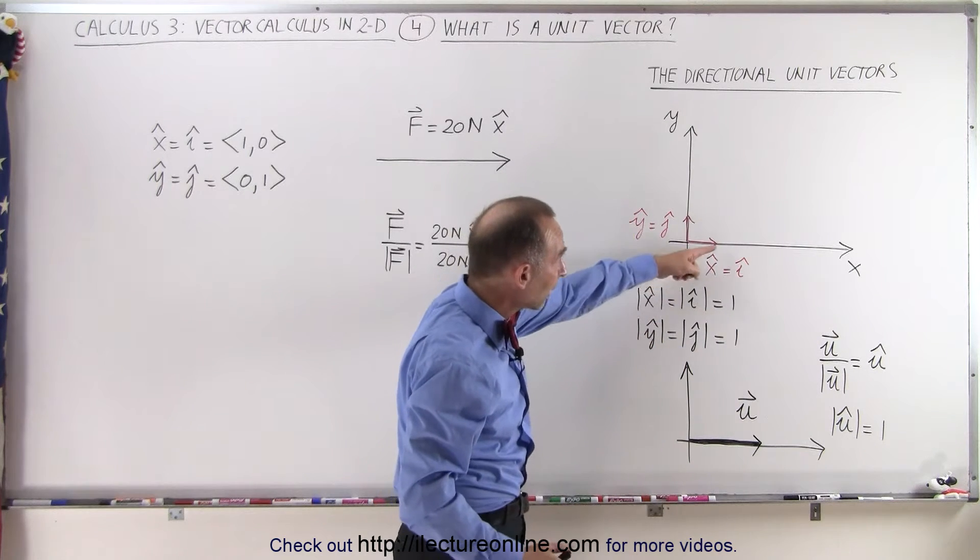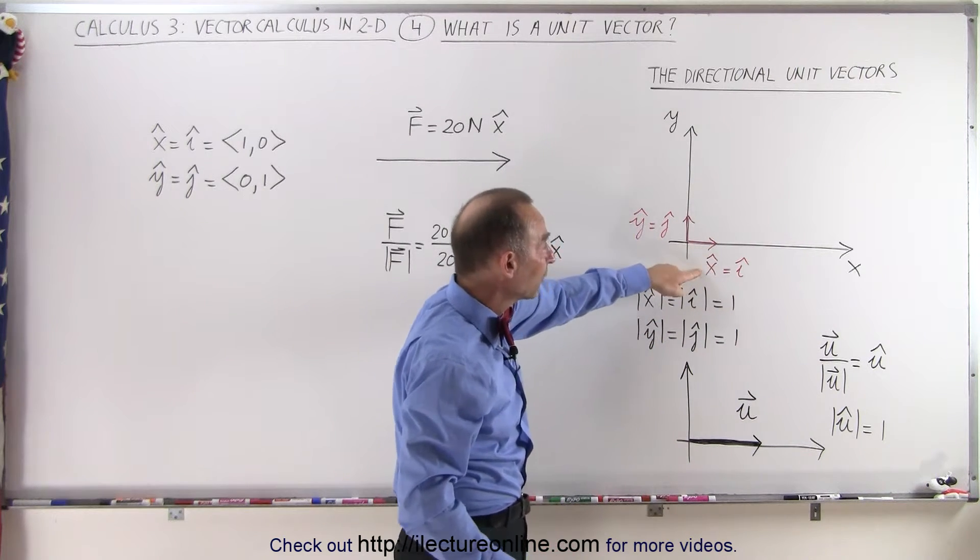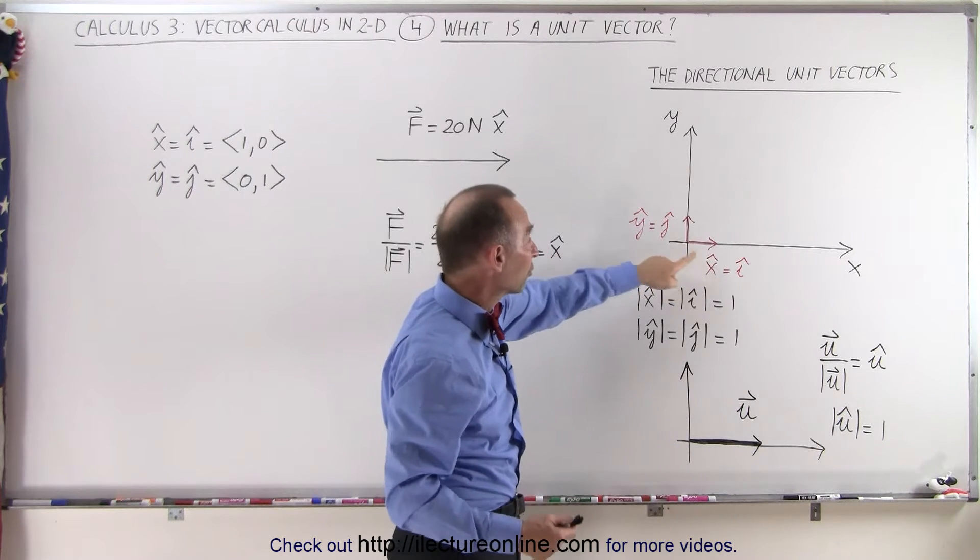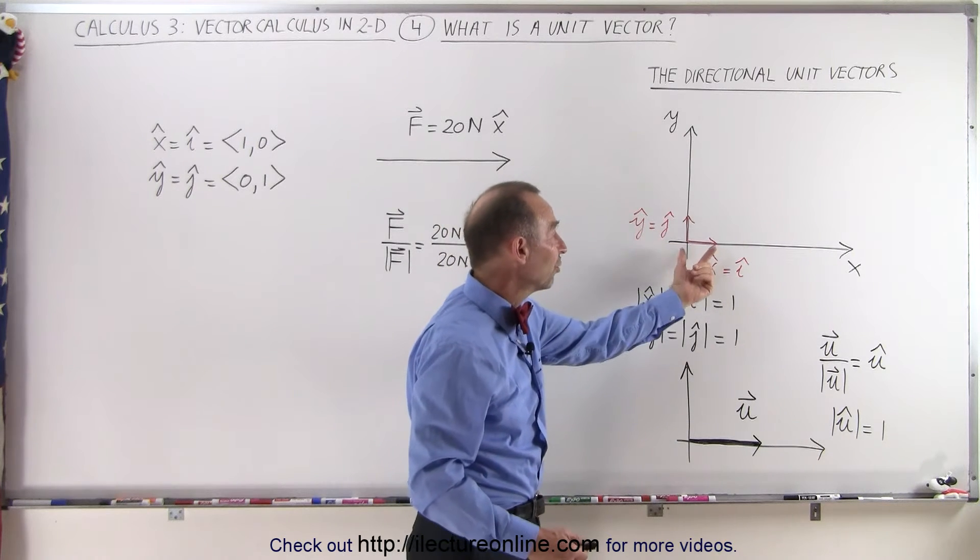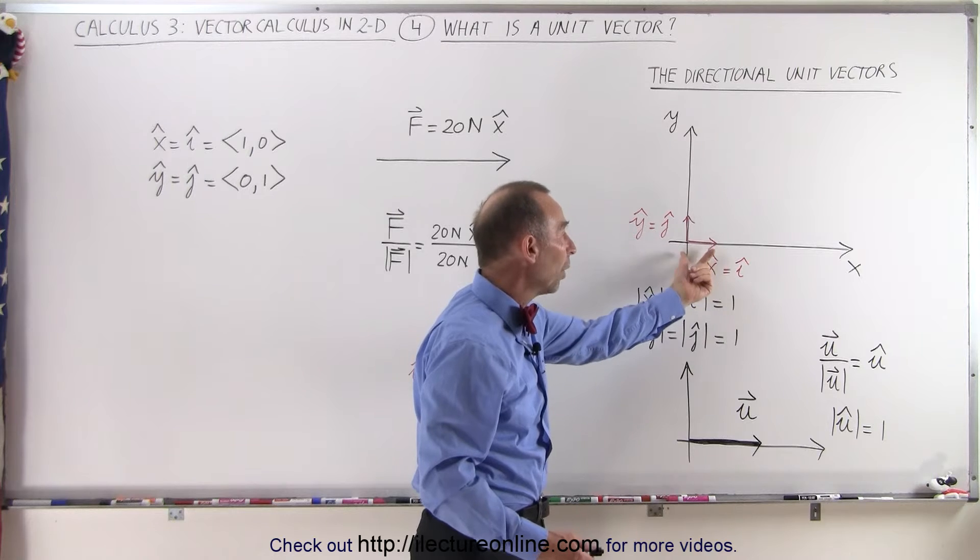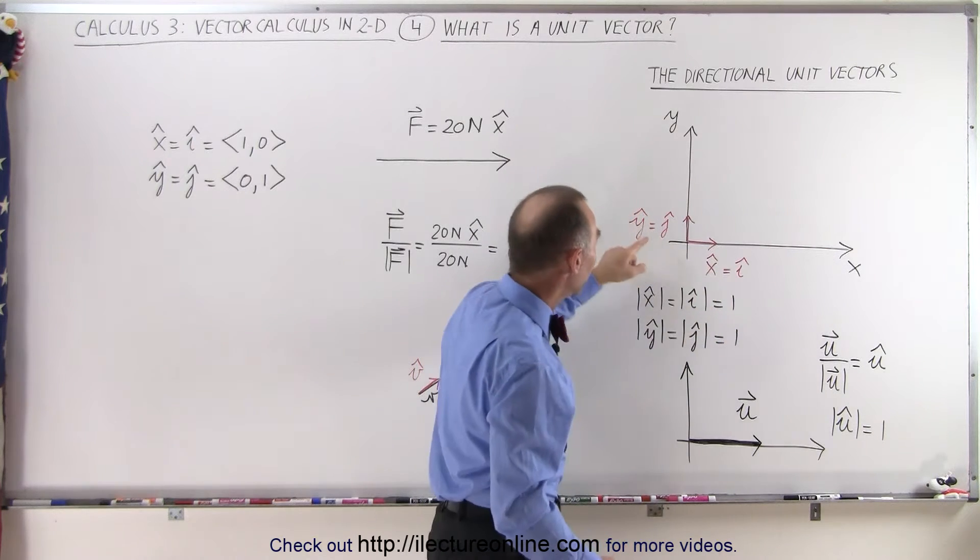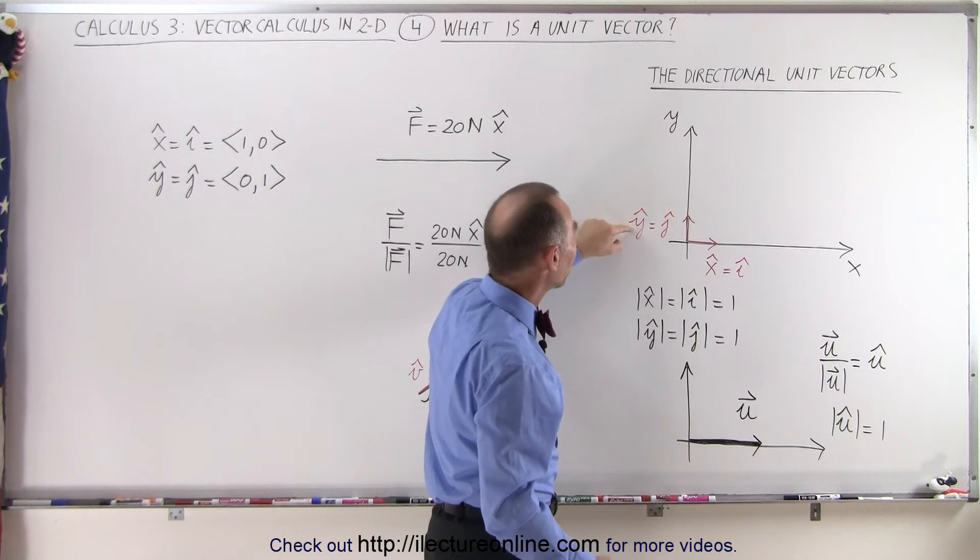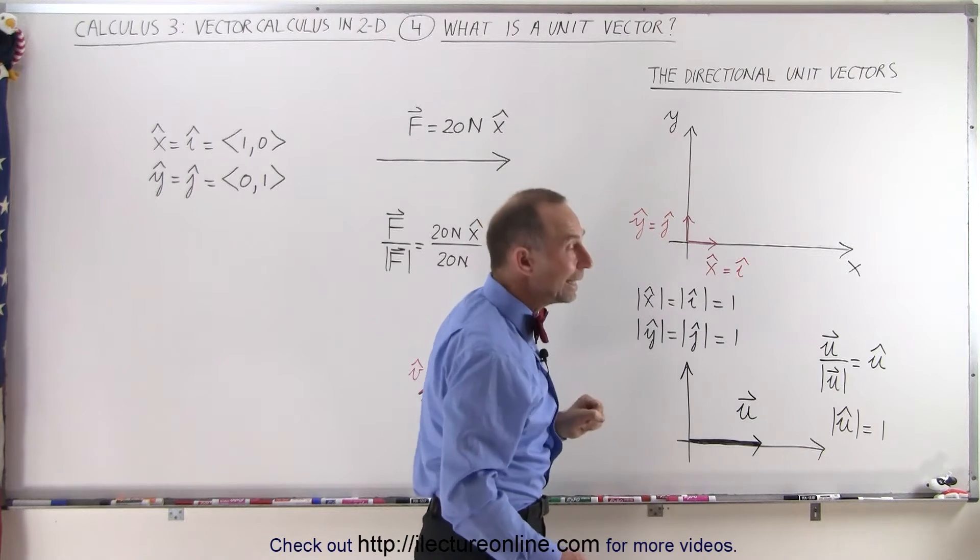And so we indicate that with that little symbol like that on top of the letter, in this case, the letter x or the letter y to indicate that this is a unit vector of length 1 pointing in the x direction. This is a unit vector of length 1 pointing in the y direction.